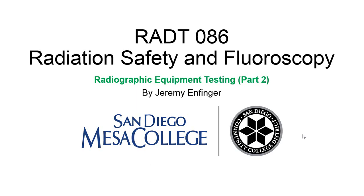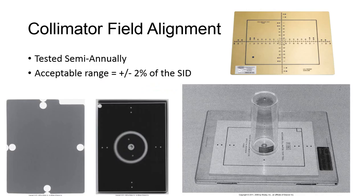Radiographic Equipment Testing, Part 2. When you adjust the collimation on the tube housing, the only visual indicator of the actual field size is produced by a light being reflected off a mirror in the tube housing assembly.